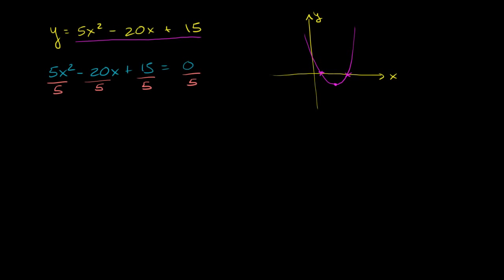And so that will give me, these cancel out, and I am left with x squared minus 20 over 5 is 4x plus 15 over 5 is 3, which is equal to 0 over 5 is just 0.